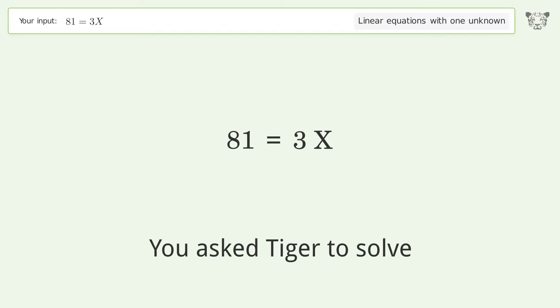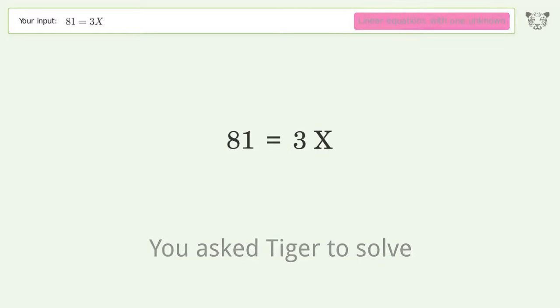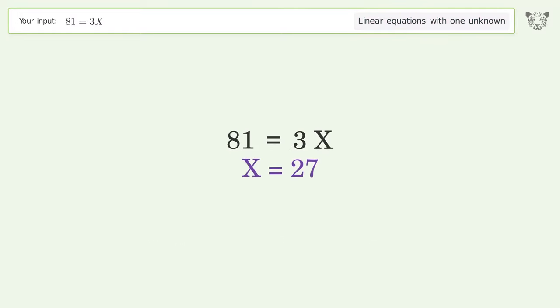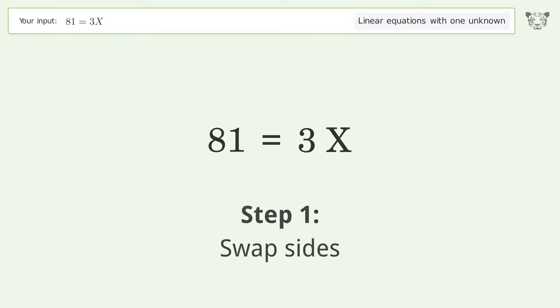You asked Tiger to solve this. It deals with linear equations with one unknown. The final result is x equals 27. Let's solve it step by step — swap sides.